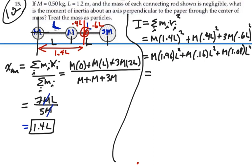And 0.6 squared is 0.36 times 3 times l squared. So 1.96 plus 0.16 plus 1.08 is 3.2, so this is 3.2ml squared.